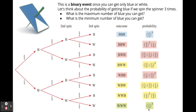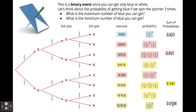All probabilities add up to one. The probability of getting exactly two blues means adding all the red outcomes together — blue-blue-white, blue-white-blue, and white-blue-blue. The probability of getting three blues is 0.421. The probability of exactly two blues happens to also be 0.421. Adding up the yellows gives another probability, and the final (zero blues) gives the last value. With three trials, there are four possible outcomes: 0, 1, 2, or 3 blues, and all probabilities sum to one.